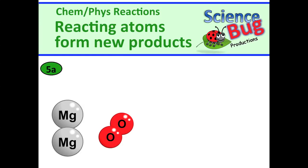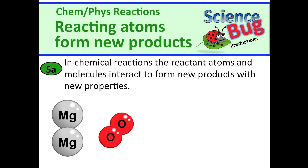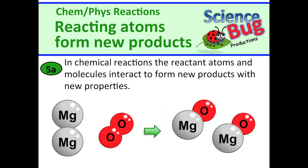So we've been going over chemical reactions. Standard 5a states that in a chemical reaction, the reactant atoms and molecules interact to form new products with new properties.